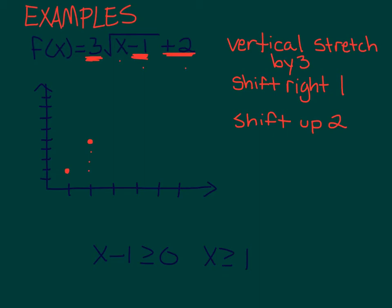Alright, if I plug in a 3, I'm going to be taking the square root of 2, that's ugly. If I plug in a 4, I'm going to be taking the square root of 3, that's ugly. If I plug in a 5, then 5 minus 1 is 4, square root of 4 is 2, 2 times 3 is 6, 6 plus 2 is 8. So my point is going to be at 5, 8 right here. So on the parent function, we had gone over 3 and up 1. Now we're going over 3 and up 1, 2, 3 because we're stretched by 3.